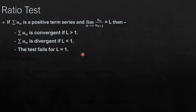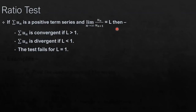You will have two questions: first, how do we get this, and second, why does the test fail for l equal to 1. The ratio test is based on the notion of geometric series. In geometric series we have u_n equal to a times r to the power n, and we determine convergence or divergence based on the value of r, the common ratio. As n tends to infinity the series behaves like a geometric series, and based on that we determine whether it is convergent or divergent.